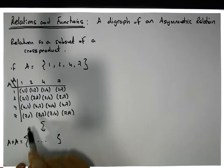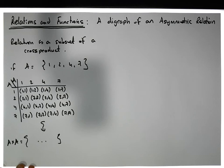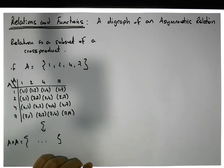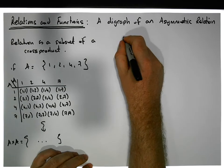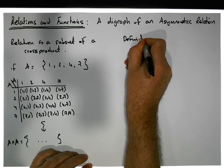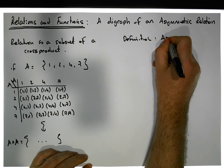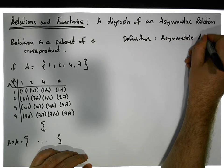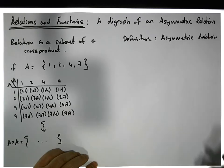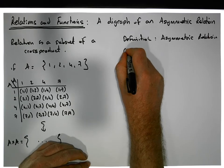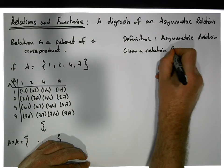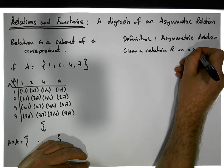A relation is simply a subset of this cross product. Now in this video we're interested in what the digraph of an asymmetric relation looks like, so we need to provide a definition of an asymmetric relation.